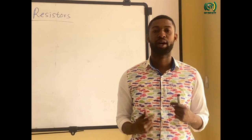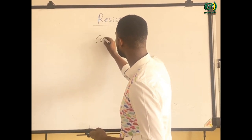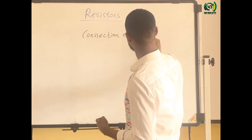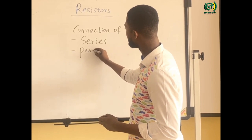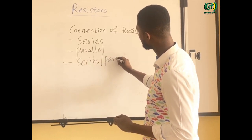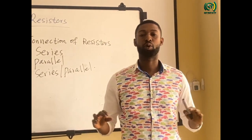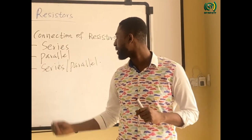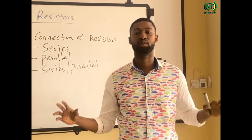Resistors can also be connected in parallel, or a combination of series and parallel. When we connect resistors in series, the same current flows through all the resistors sequentially, while the voltage is shared between the resistors. And whenever we connect resistors in parallel, they share the same voltage but the current divides based on the value of the individual resistors.